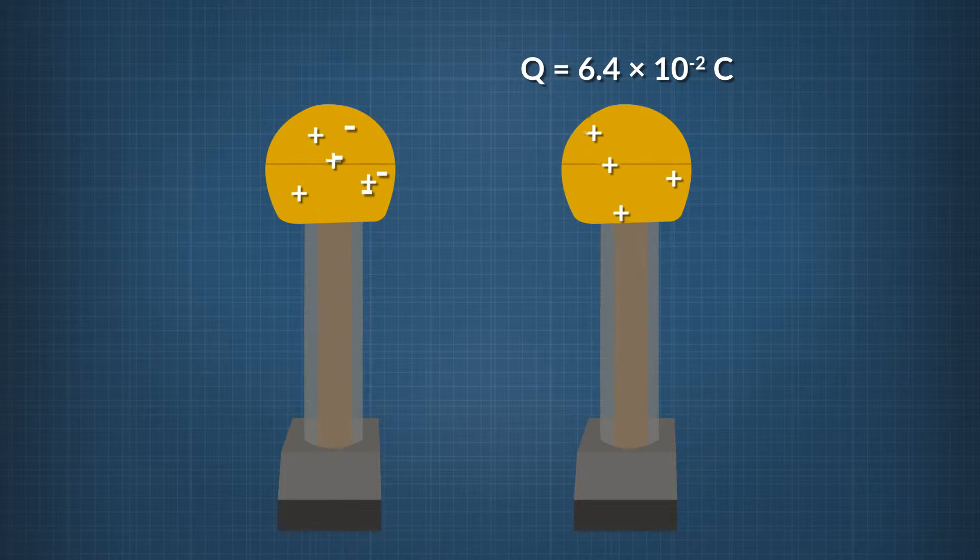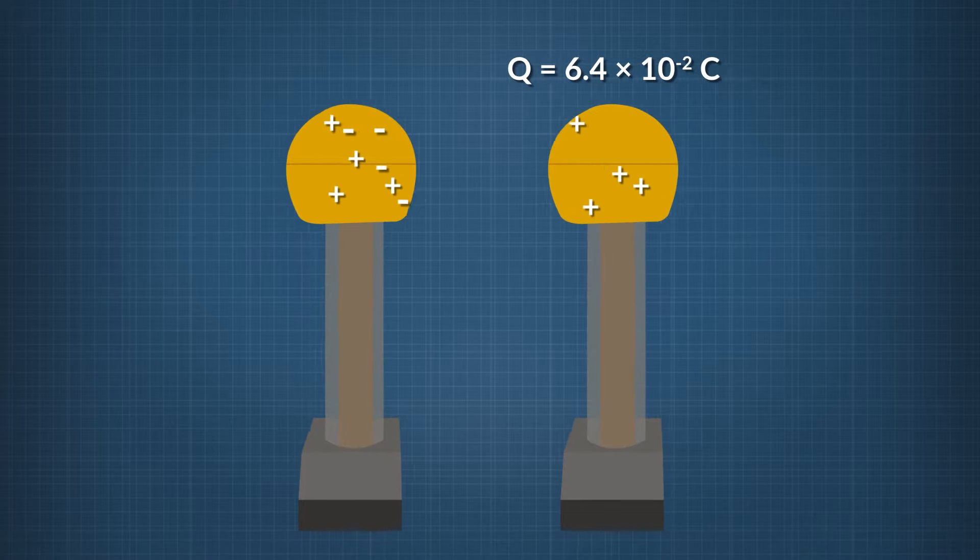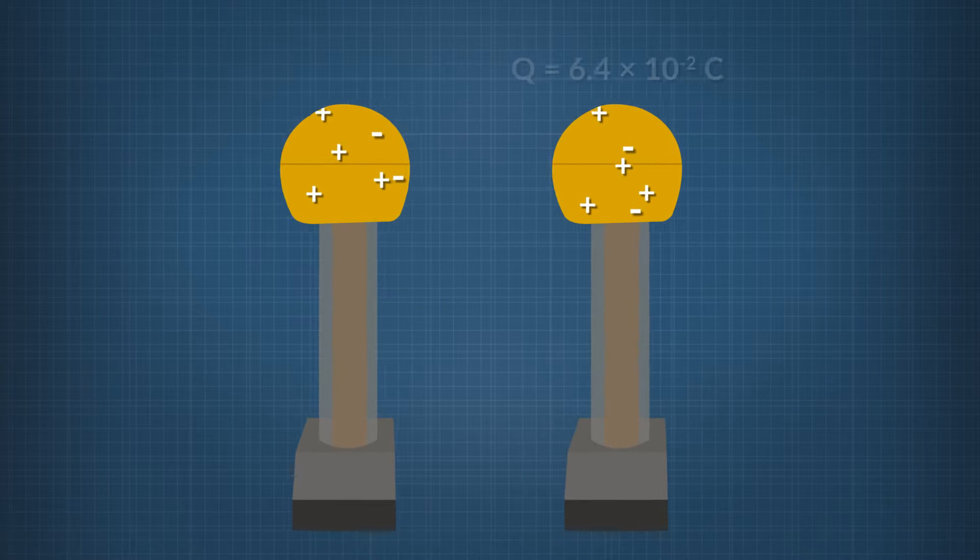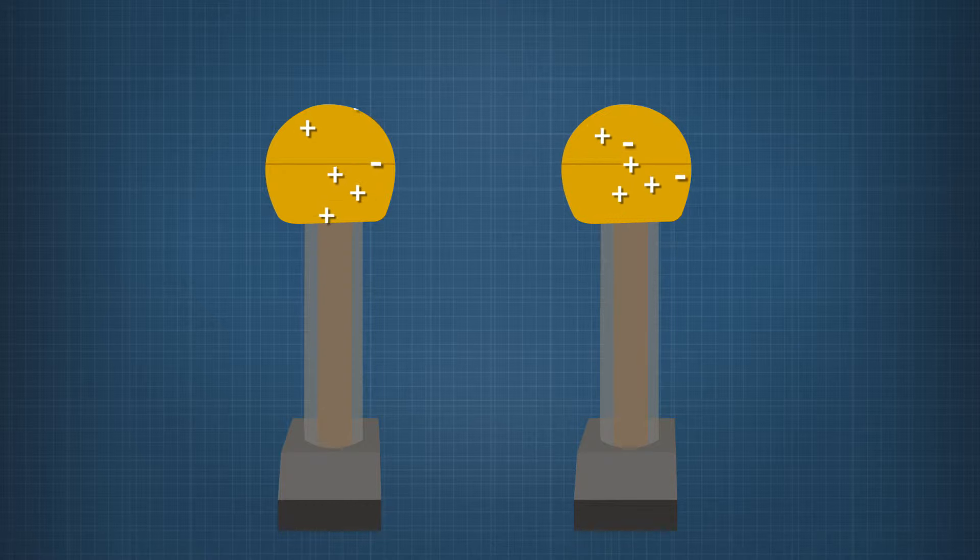Here's a practice problem to test our understanding about conduction. Two identical metal spheres rest on insulating platforms on a tabletop. One metal sphere is electrically neutral. The other sphere is given a positive net charge of 6.4 times 10 to the negative 2 coulombs. The spheres are brought into contact with each other. As a result, the first metal sphere becomes charged positively. What is the charge on the sphere that started out neutral? And which of the following occurred during the process? Circle or write down all that apply.